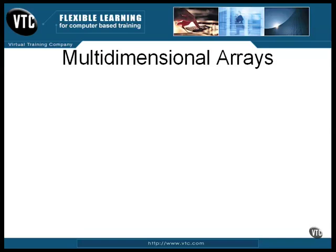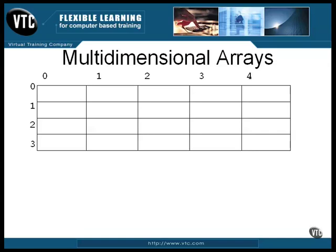A multidimensional array is simply an array where each member is also an array. For example, this is a diagram of a two-dimensional array. It's five elements wide by four elements high. Now in C, an array of integers of this size can be declared this way.